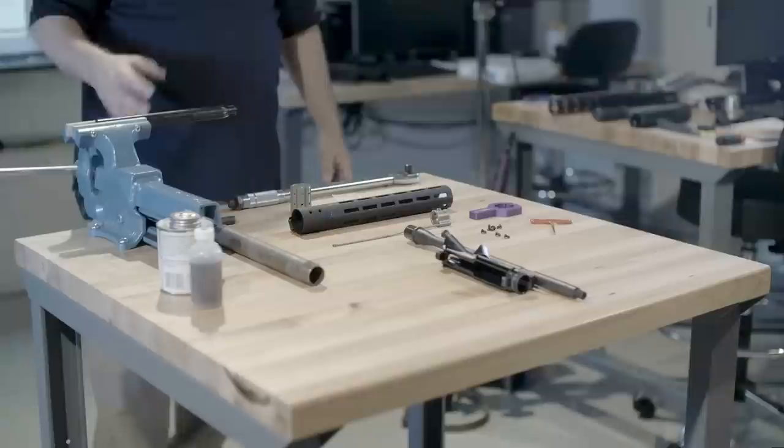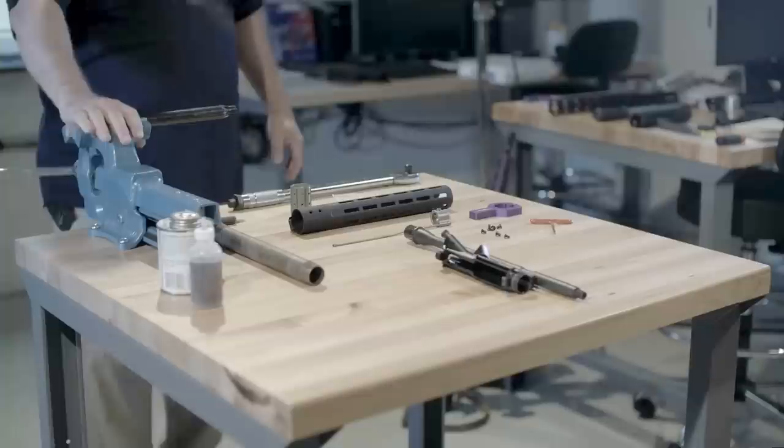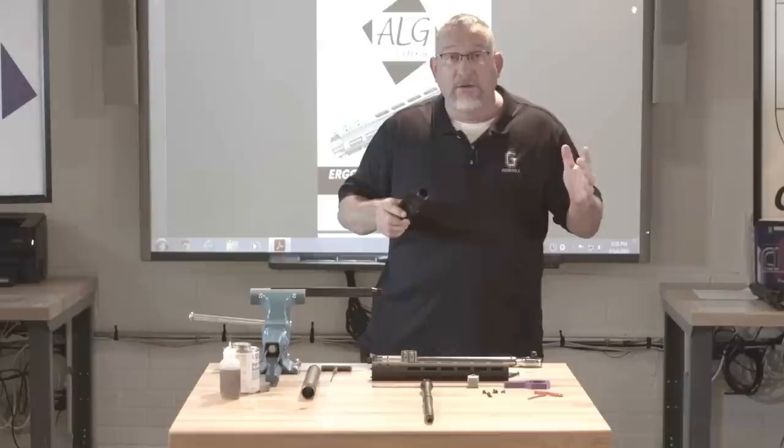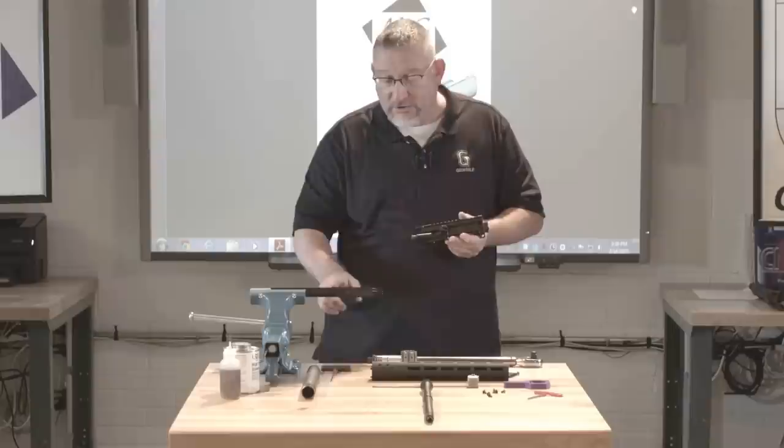First thing you've got to do when you go to install a rail is you have to have a proper place to work on it. You need a workbench with a vise, because with that vise you've got to be able to hold the upper receiver properly. And there's different ways out on the market here to hold an upper receiver for an AR-15. There's vise clamps, different types of tools.